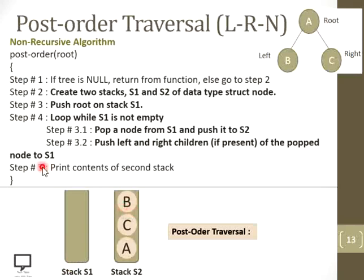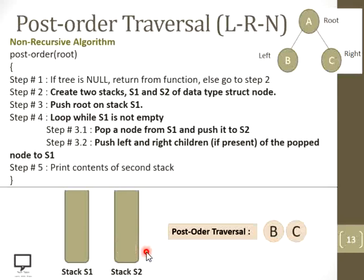Step 5: print the contents of stack S2. Pop the top element B and display it as the first element of post-order traversal. Then pop C and display it. Then pop A and display it. In this way you find the post-order traversal for the given binary tree as B, C, A.